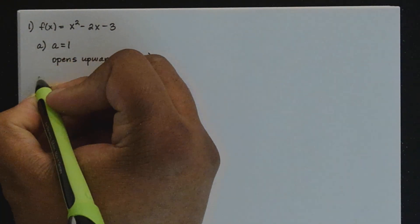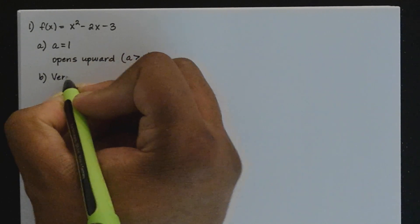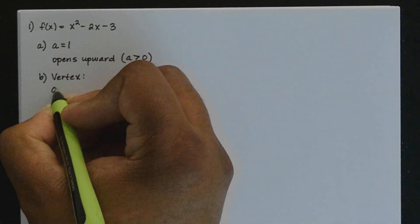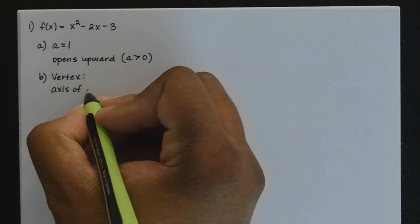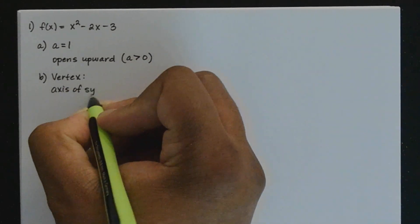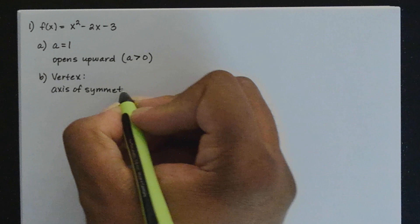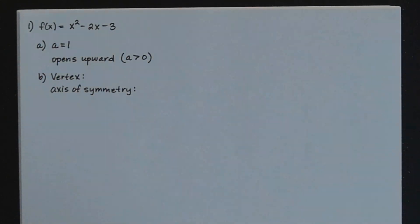Now part B is to identify the vertex of the parabola. I didn't put this in the study sheet, but we're also going to identify the axis of symmetry as well. So let's start by identifying the vertex.